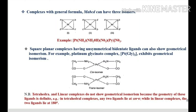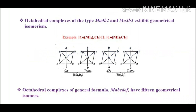It is important to note that tetrahedral and linear complexes do not show geometrical isomerism because their geometry is fixed. In tetrahedral complexes, any two ligands lie at 109.5 degrees, while in linear complexes the two ligands lie at 180 degrees. Octahedral complexes of the type MA4B2 and MA3B3 do exhibit geometrical isomerism — for example, tetramine dichlorocobalt(3+) chloride and triaminetrichlorocobalt(3).